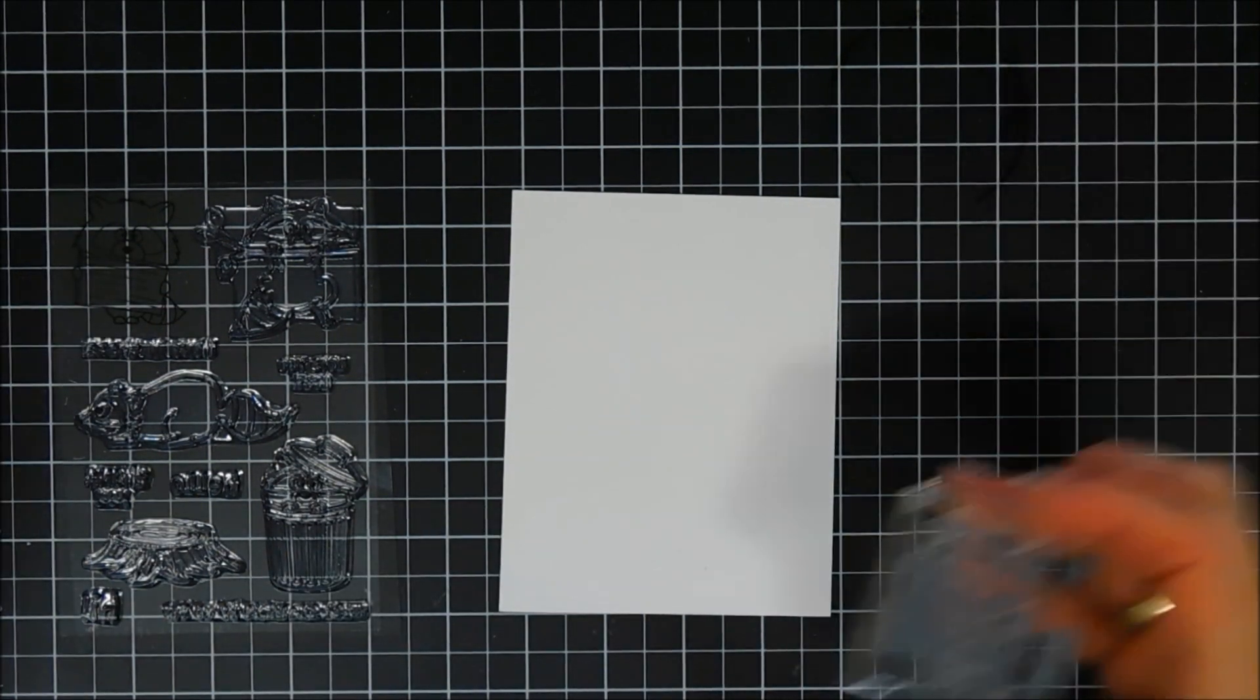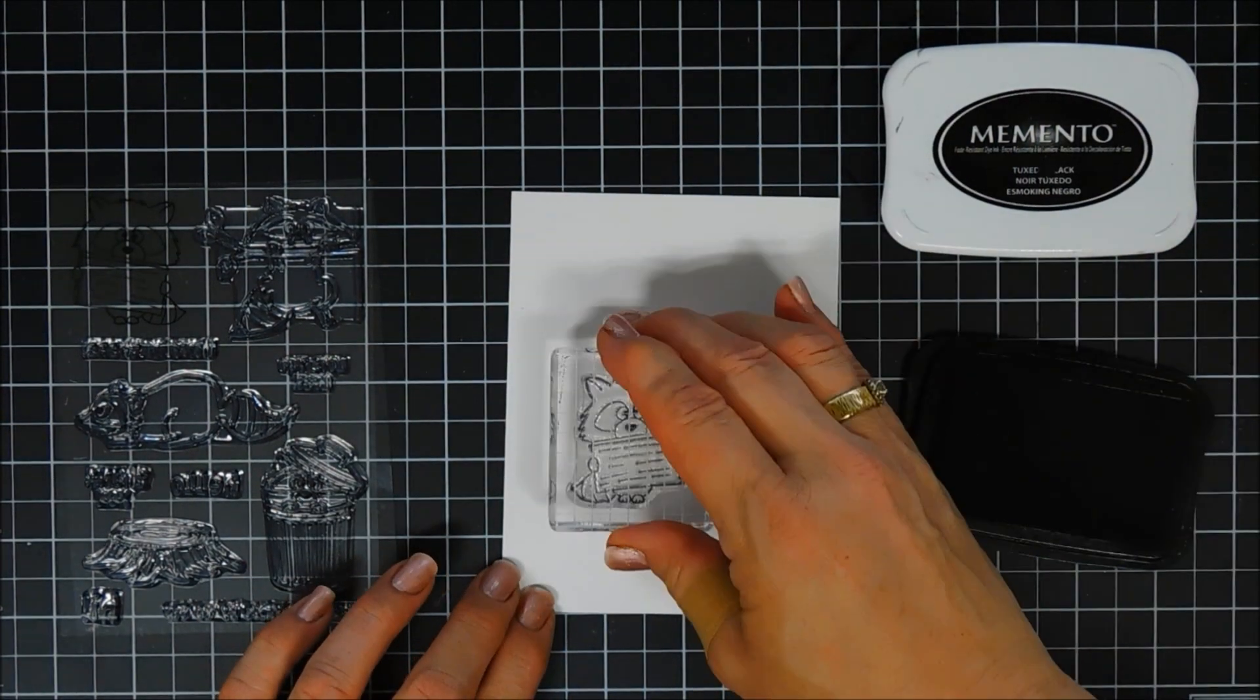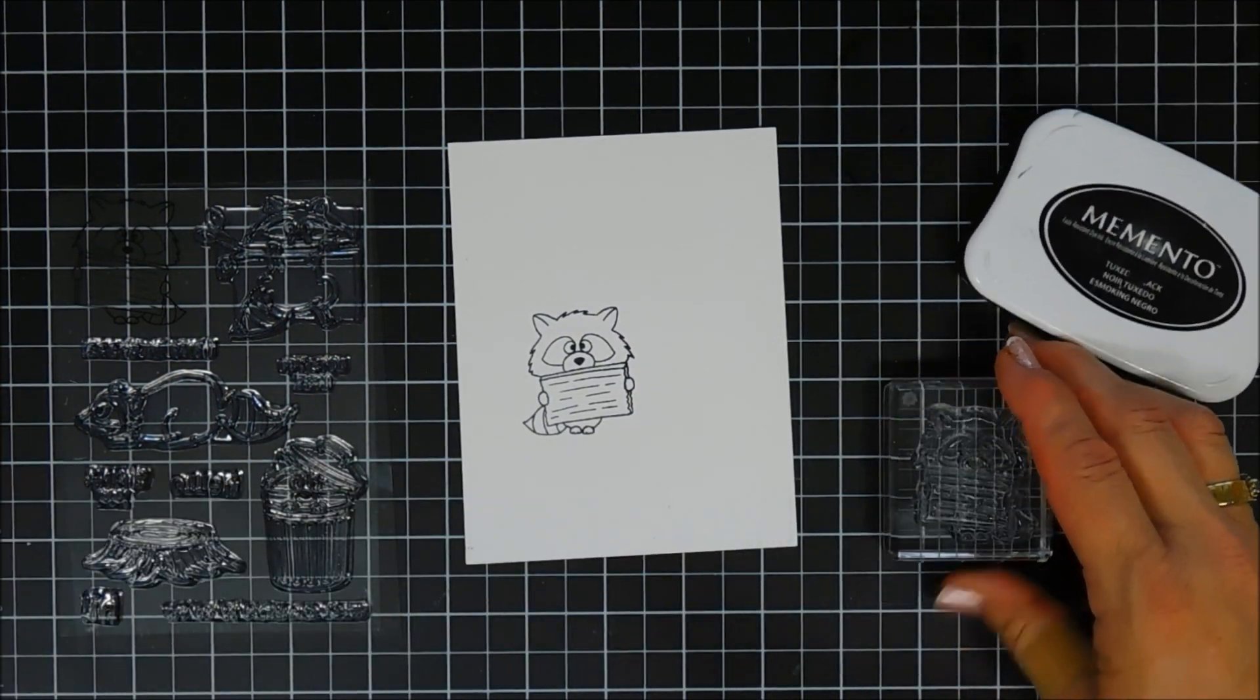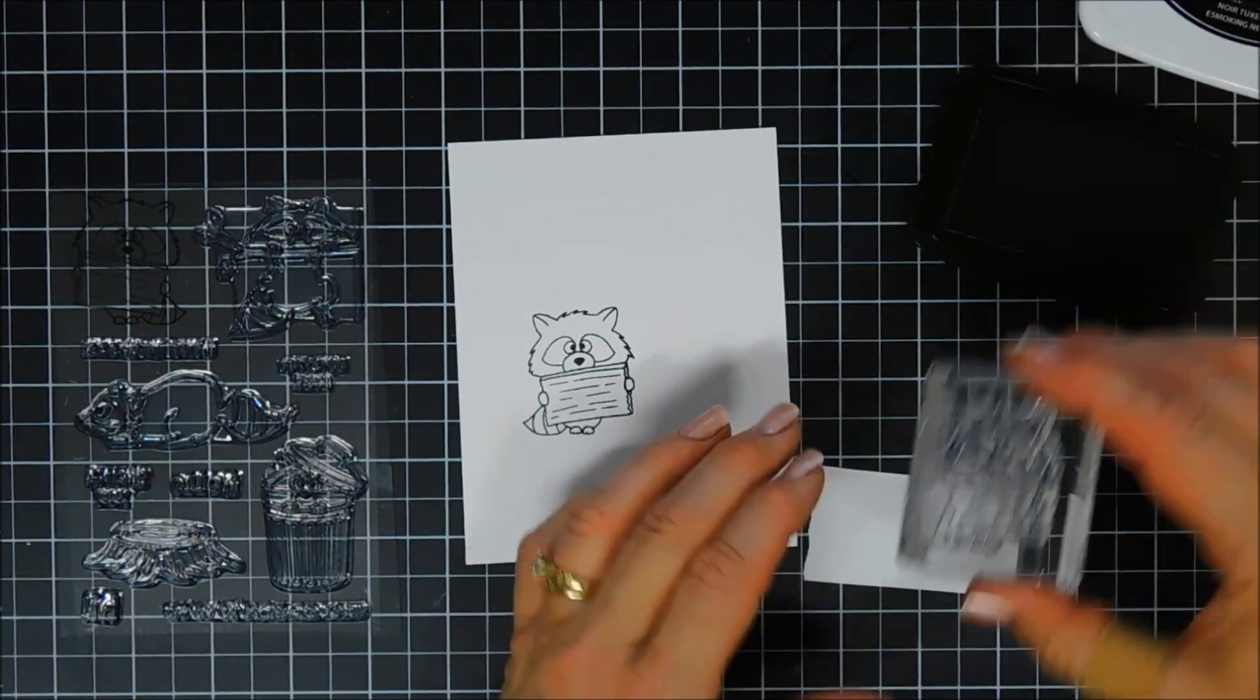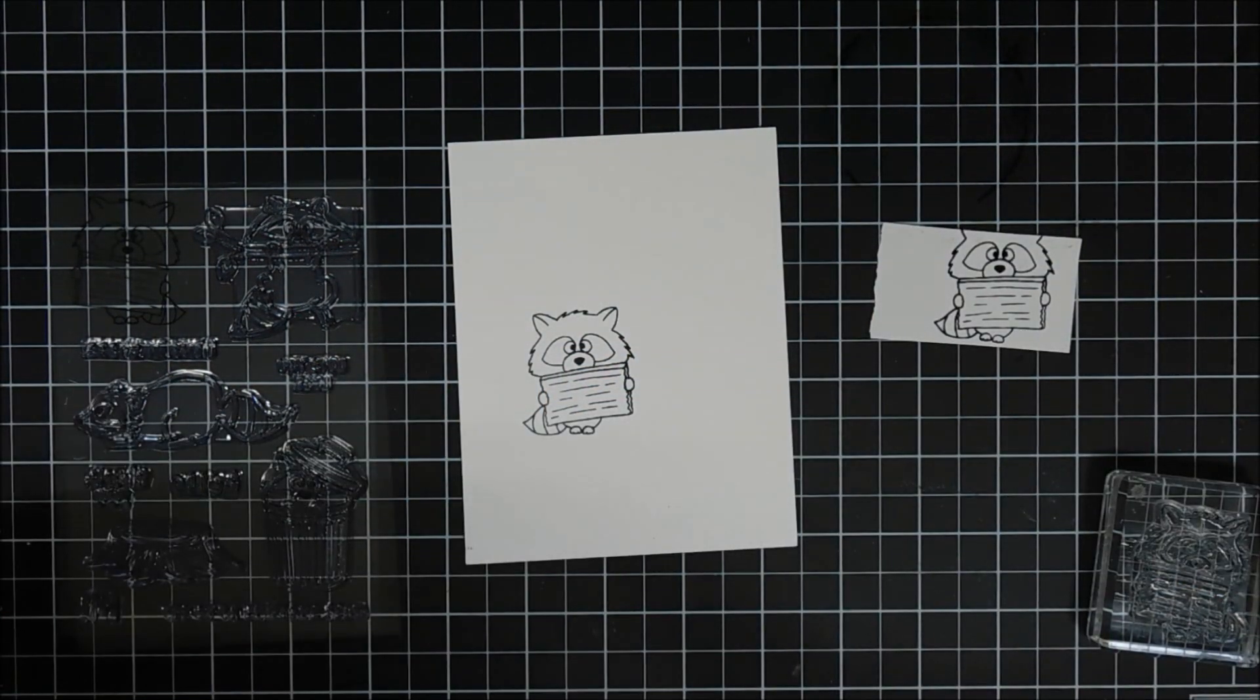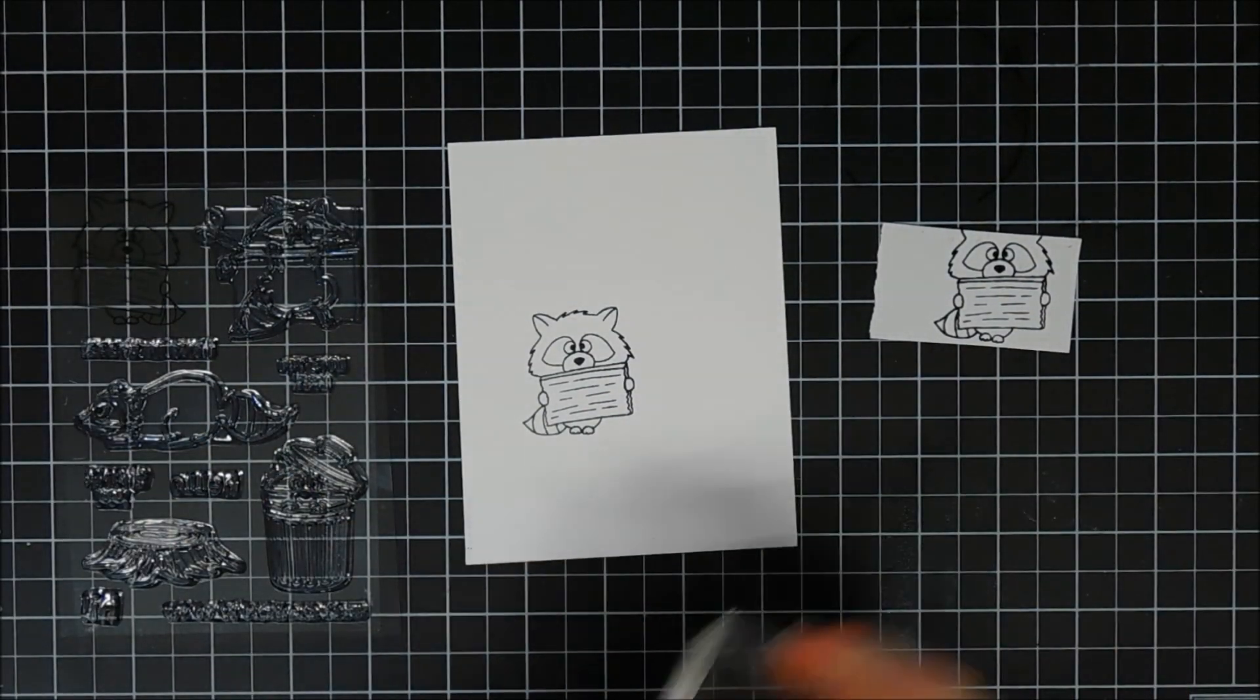So for today's card, I chose the raccoon that's holding the little sign, a little wood sign. I'm stamping him on some Neenah 80 pound cardstock with Memento Tuxedo Black ink. Then we're going to bring in a piece of masking paper. This is Gina K Masking Magic. I'm going to stamp the raccoon on my mask, and it didn't need to fit completely on there because I just wanted the bottom portion to be masked off. So his head's chopped off, but that's okay.